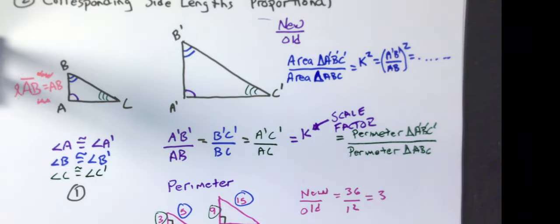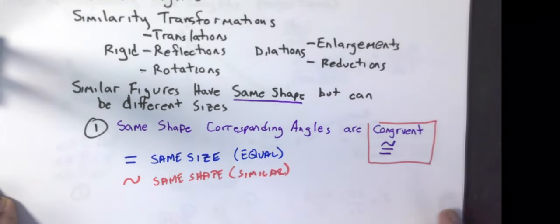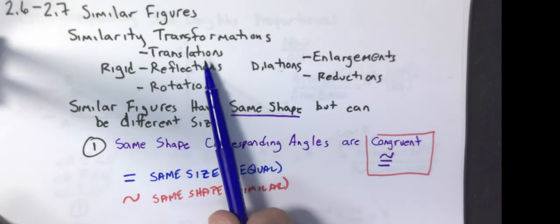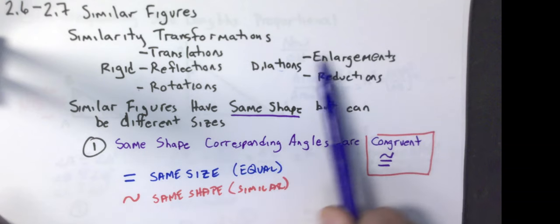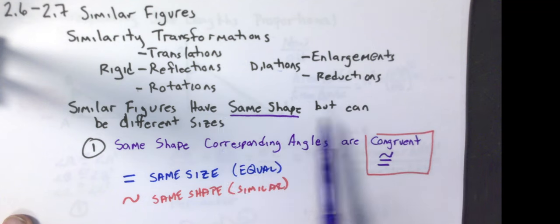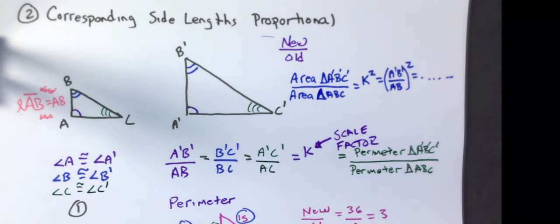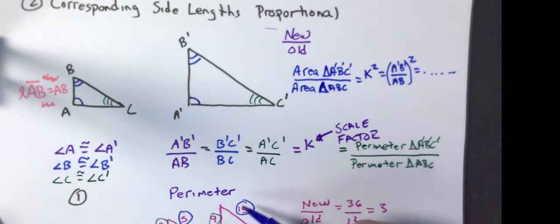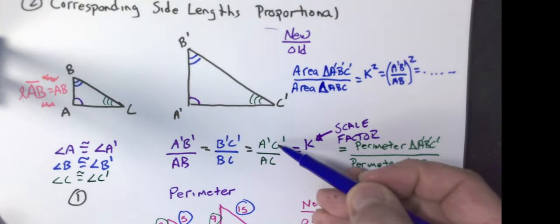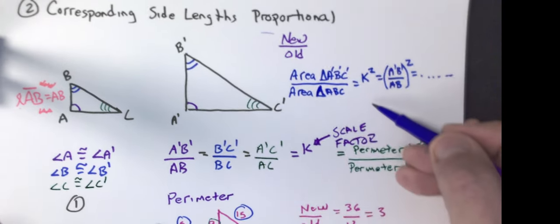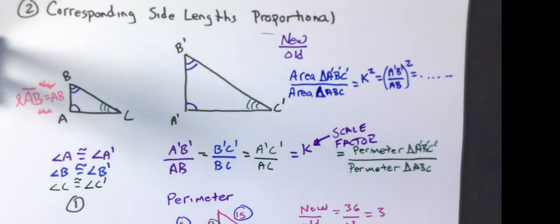Quick review: similar figures are created by a combination of rigid transformations (translations, reflections, rotations) or dilations (enlargements and reductions). Similar figures have the same shape but can be different sizes. Corresponding angles are congruent; corresponding side lengths are proportional, which gives the scale factor. Perimeters use the same scale factor k, while areas use the scale factor squared.